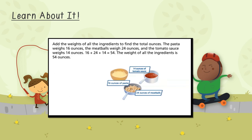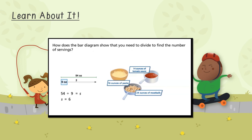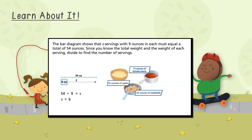Add the weights of all the ingredients to find the total ounces. The pasta weighs 16 ounces, the meatballs weigh 24 ounces, and the tomato sauce weighs 14 ounces. 16 plus 24 plus 14 equals 54. The weight of all the ingredients is 54 ounces. Divide to find the number of servings — use S to represent the number of servings. 54 divided by 9 equals S, so S equals 6. Mark made 6 nine-ounce servings. The bar diagram shows that S servings with 9 ounces each must equal a total of 54 ounces — since you know the total weight and weight of each serving, divide to find the number of servings.